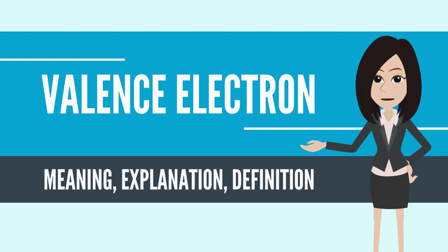Atoms with one or two more valence electrons than are needed for a closed shell are highly reactive due to the following reasons: 1. It requires relatively low energy to remove the extra valence electrons to form a positive ion. 2. Because of their tendency either to gain the missing valence electrons, thereby forming a negative ion, or to share valence electrons, thereby forming a covalent bond.